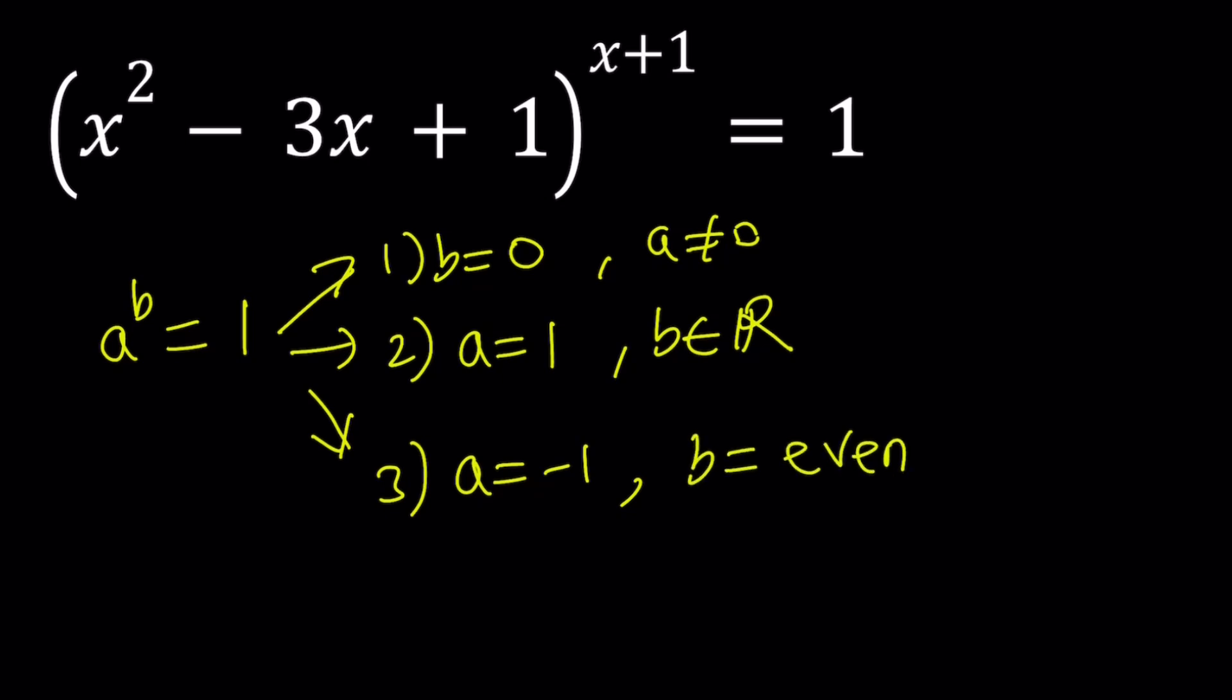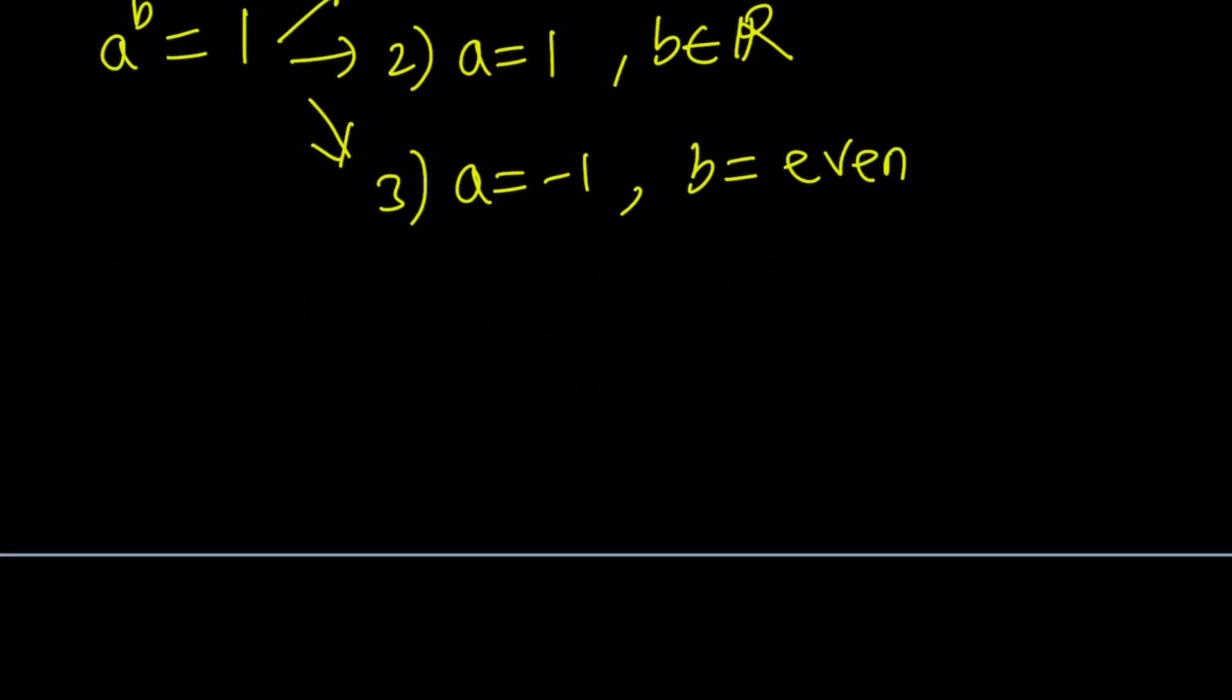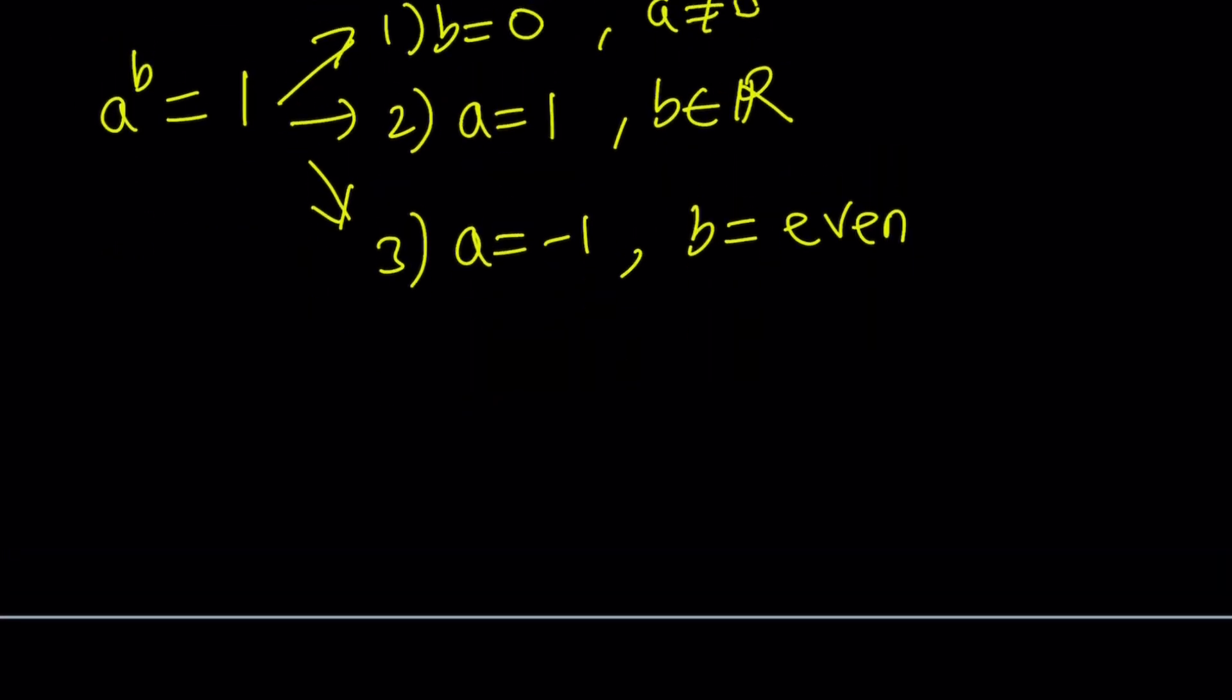Of course, when you're looking for integer solutions, this is the case. Because otherwise, when the base is negative and you don't have an integer exponent, then you run into problems. The exponential function is not going to be well defined, and you're going to see it on the graph that I'm going to show you at the end. So we're going to go through the cases, talk about the solutions, and then check out the graph.